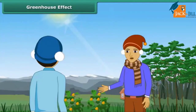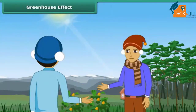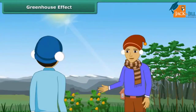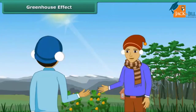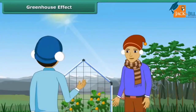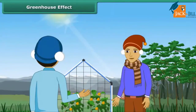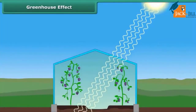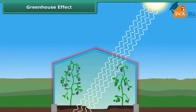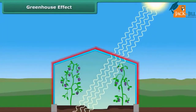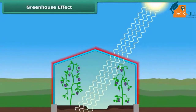Extreme cold may ruin plants, but we can use the greenhouse effect to protect them. A greenhouse is a house with many glass panes. When solar rays come into this house, they heat up the air inside. That hot air is trapped inside, creating a warm and humid environment for plants to grow.